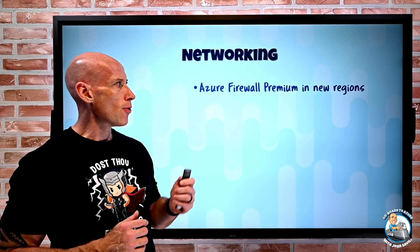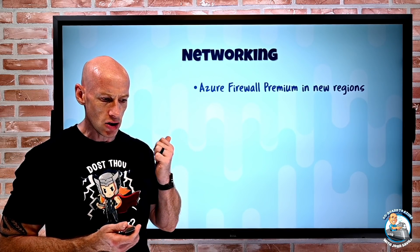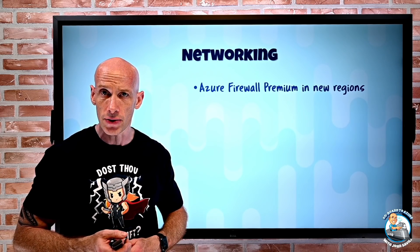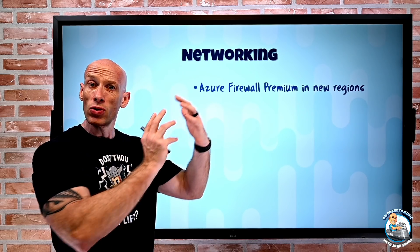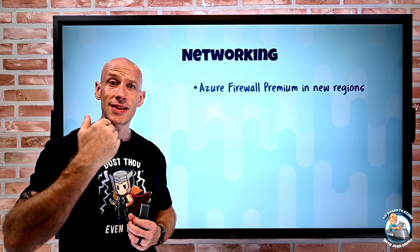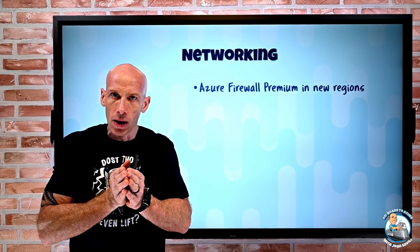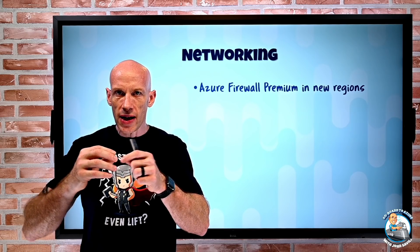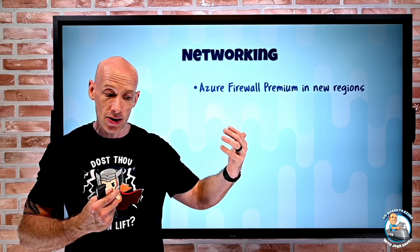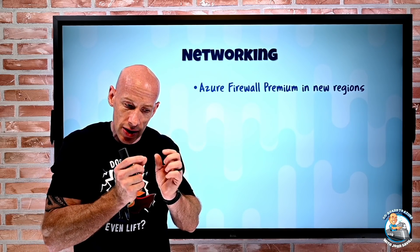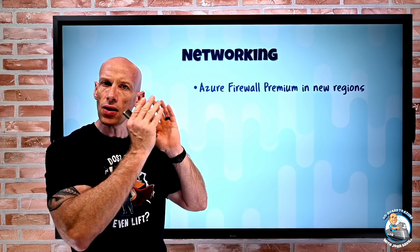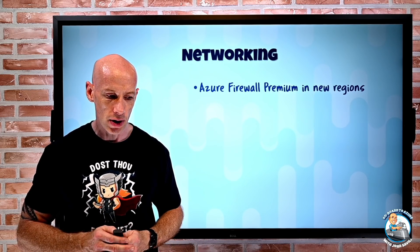On the networking side, Azure Firewall Premium is now available in new regions: US Gov Texas, US Gov Arizona, US Gov Virginia, China North 2, and China East 2 — basically sovereign clouds. Premium had a number of big features — I did a whole deep dive video on Azure Firewall demoing all the premium features. The biggest thing was the ability to inspect TLS traffic: it sits in the middle, generates certificates so the client talks to it, it reads the traffic and sends it on. This enables web categories for TLS traffic, URL filtering, intrusion detection — all now available in those sovereign regions.